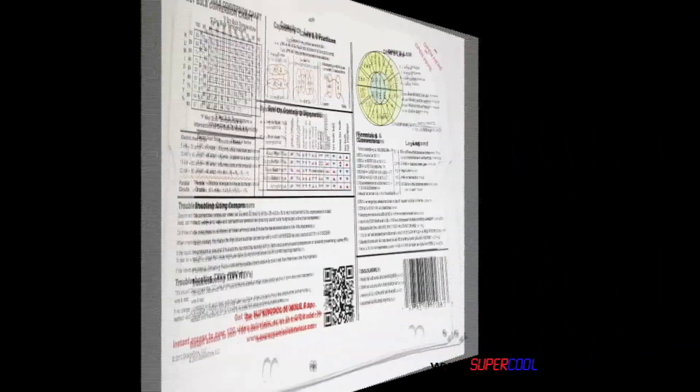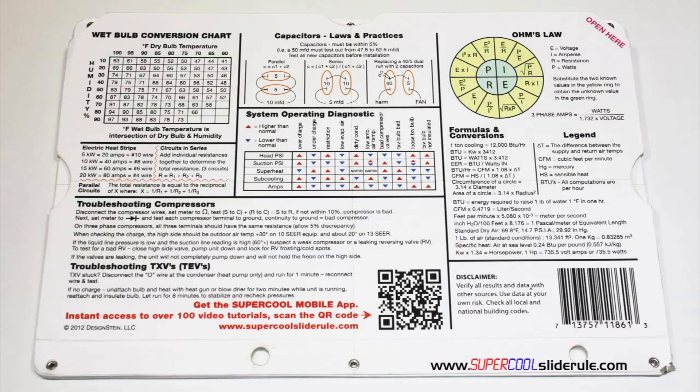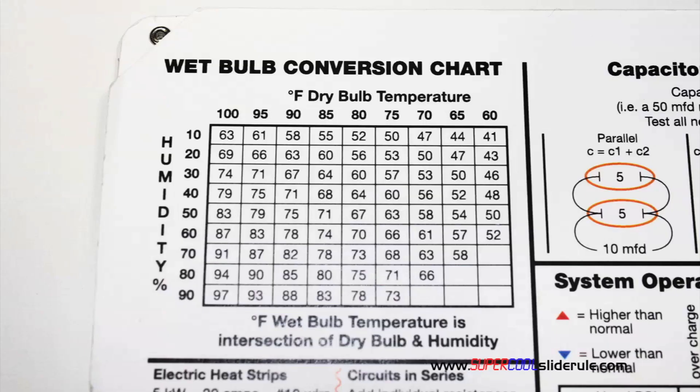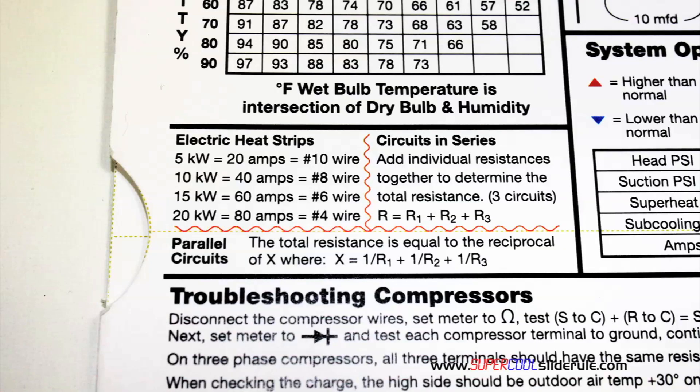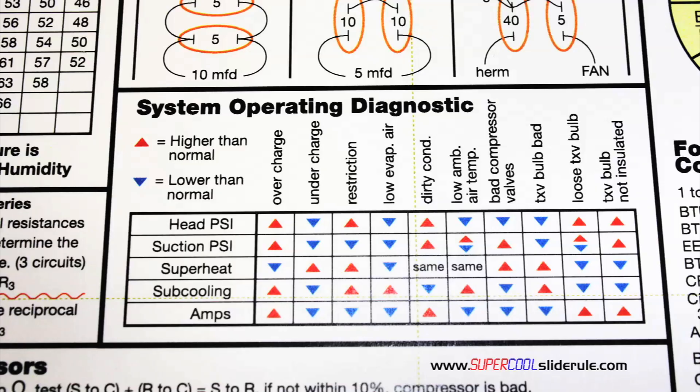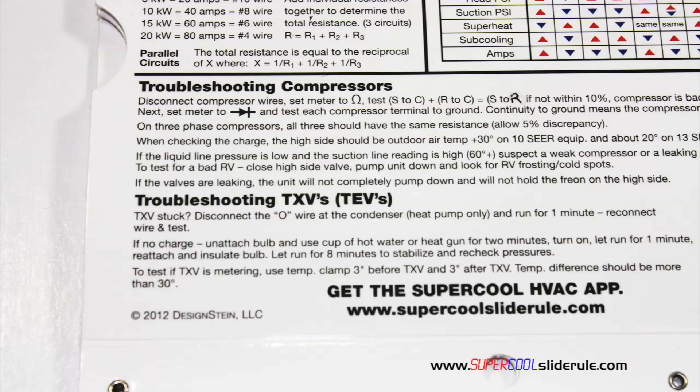The back cover contains required formulas. It has capacitor rules and practices, a wet bulb conversion chart, how to perform computations on series or parallel circuits, an electric heat strip guide, a complete system troubleshooting diagnostic chart, and how to troubleshoot compressors and TXVs.